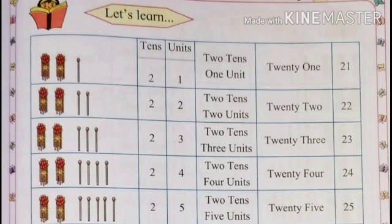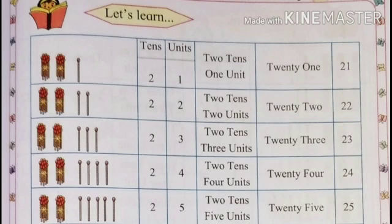Two bunches of math sticks means 20 math sticks. With 3 math sticks: 23. That is 2 tens and 3 units — 23. The spelling of 23 is T-W-E-N-T-Y (20) T-H-R-E-E (3): 23.